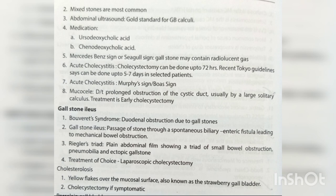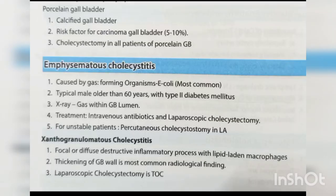Cholesterolosis: yellow flakes over the mucosal surface, also known as the strawberry gallbladder; cholecystectomy if symptomatic. Porcelain gallbladder: calcified gallbladder with 5–10% risk of carcinoma; cholecystectomy in all patients. Emphysematous cholecystitis is caused by gas-forming organisms (E. coli most common), typically in males older than 60 years with type 2 diabetes mellitus; X-ray shows gas within GB lumen; treatment is IV antibiotics and laparoscopic cholecystectomy; for unstable patients, percutaneous cholecystostomy. Xanthogranulomatous cholecystitis: focal or diffuse destructive inflammatory process with lipid-laden macrophages; thickening of gallbladder wall is the most common radiological finding; laparoscopic cholecystectomy is treatment of choice.